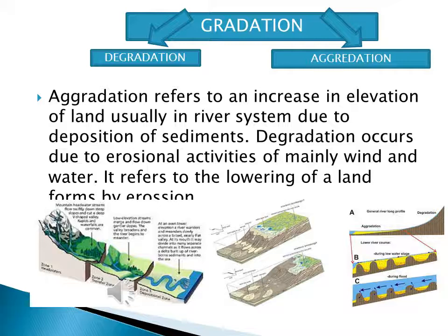Aggradation is a process in which the land surface is built up by the processes of deposition and accumulation of debris, rock fragments, clay, sand, rock waste and alluvial derivatives from transportation and denudation. The process by which the height of the land is increased is known as aggradation.